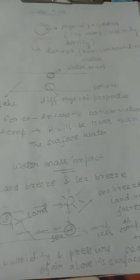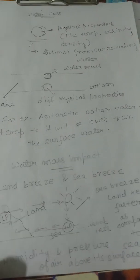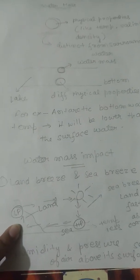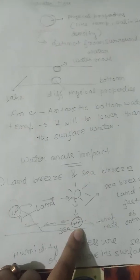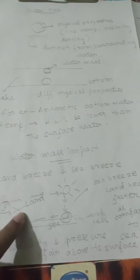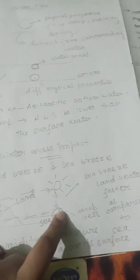So during night, land breeze will occur. This zone will have high pressure and this zone will have low pressure, so air will flow from here to here—that is, land to sea. That's why we know it as land breeze.